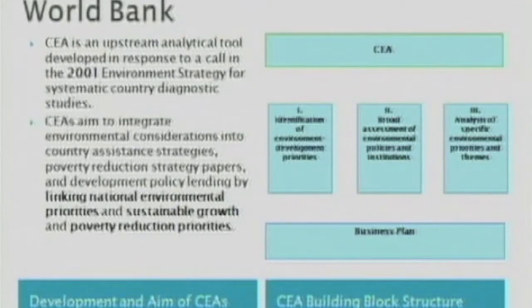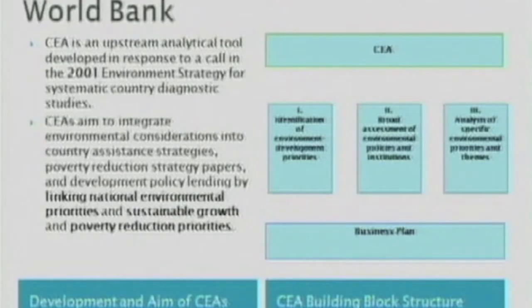The CEA at the World Bank builds on three building blocks. The first is the identification of environmental development priorities through, for example, cost of environmental degradation, surveys, adjusted net savings, and so on. The second block looks at the broad assessment of environmental policies and institutions — formal and informal rules, public participation, access to information — at both national and sub-national levels. The third building block is analysis of specific environmental priorities and themes identified in block one.